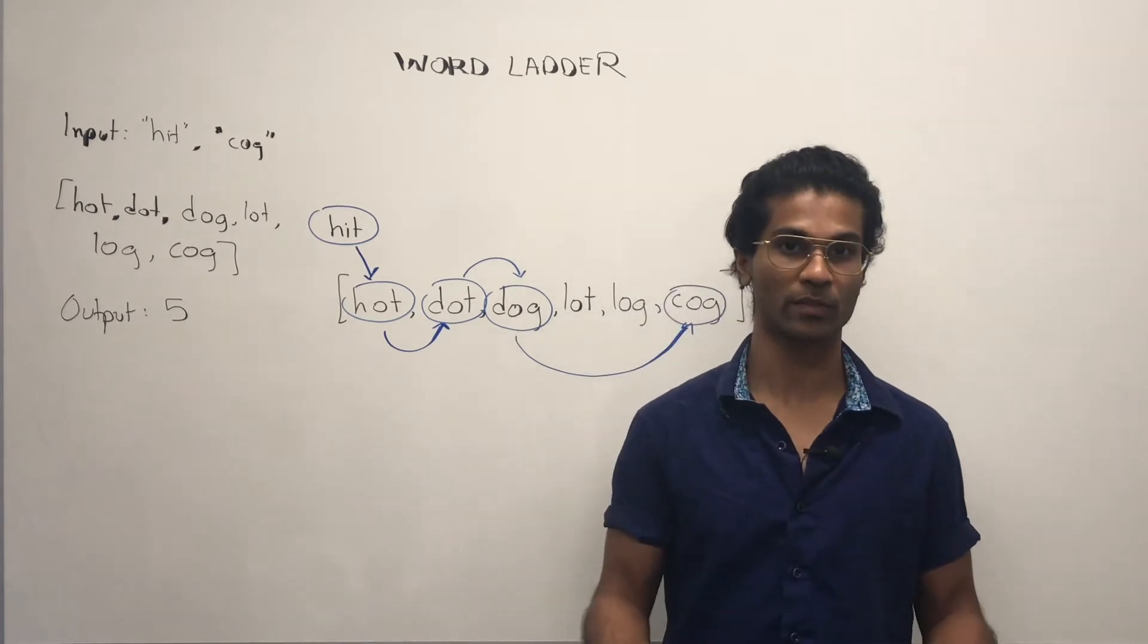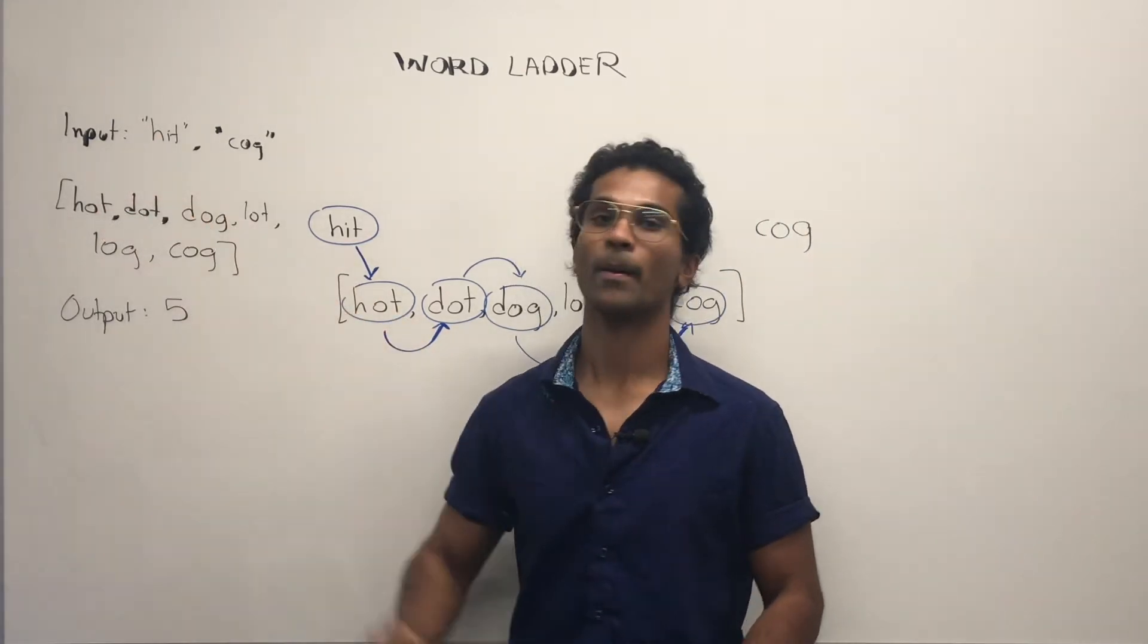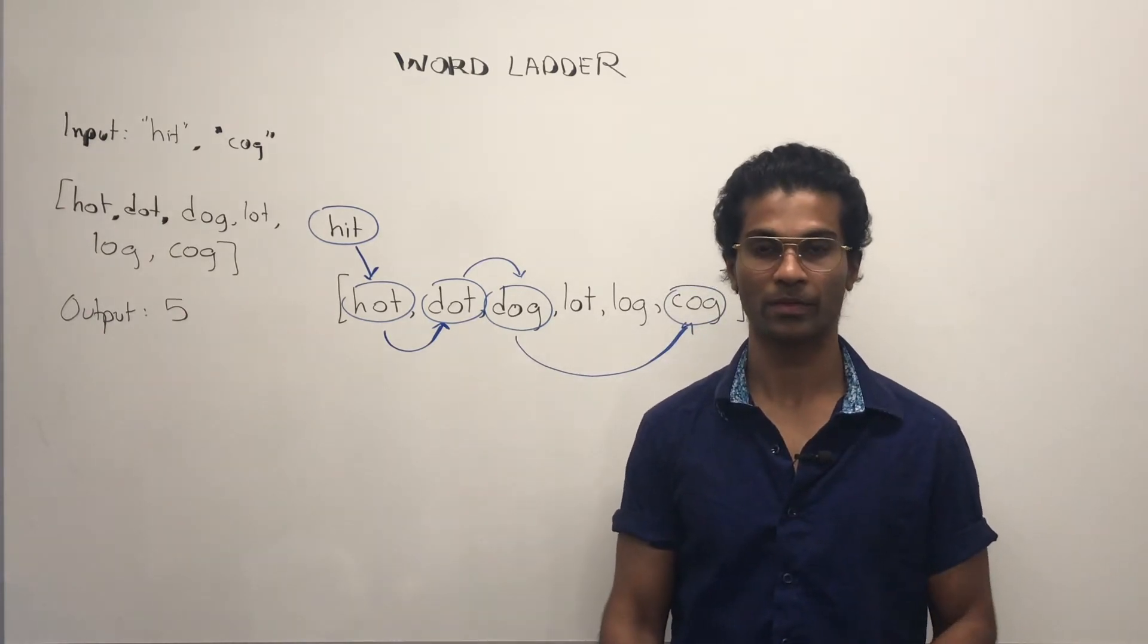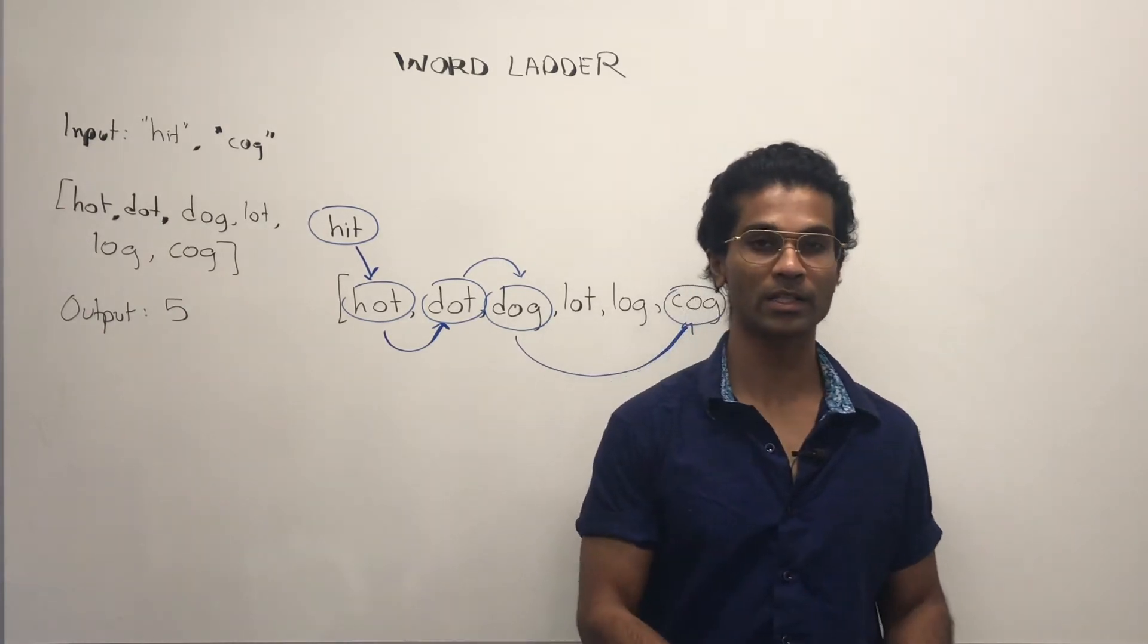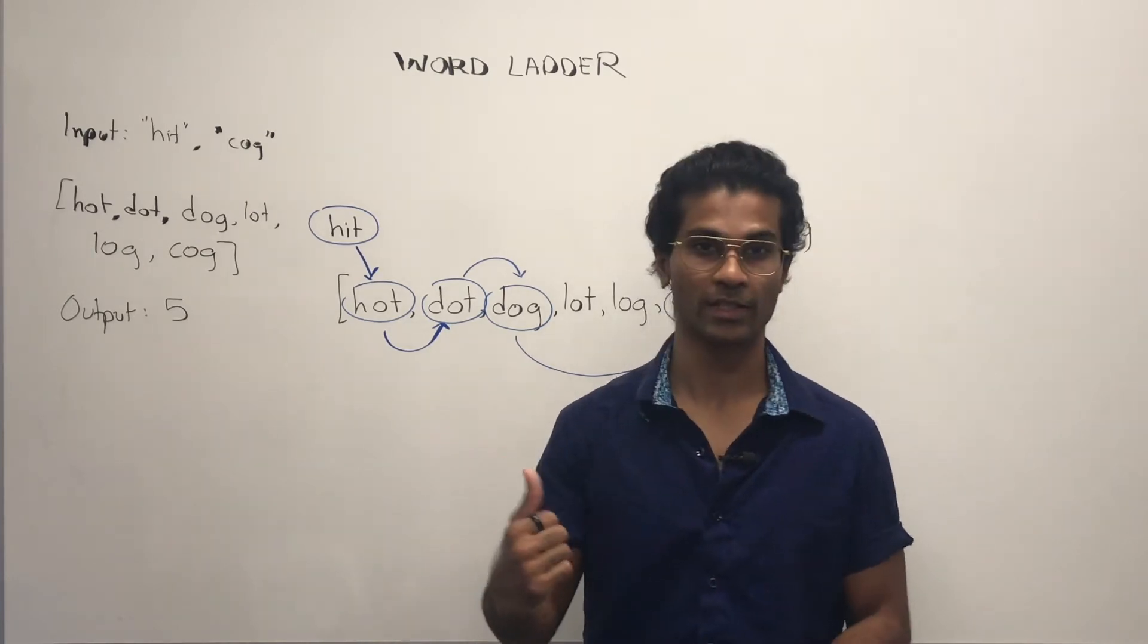So what's a transformation? If we go from one word to another word by changing one character, so hit becomes hot because I changed I to O. So let's look at how we get the answer five for this example.